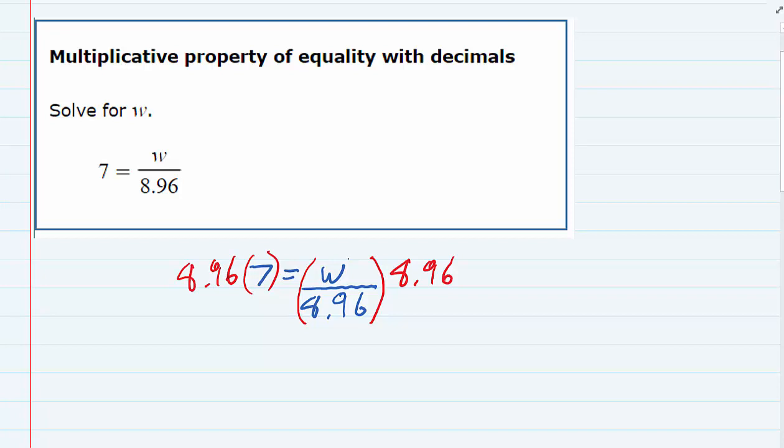Now on the right-hand side of our equation, dividing by 8.96 and multiplying by 8.96, those two cancel, leaving me with the w by itself.